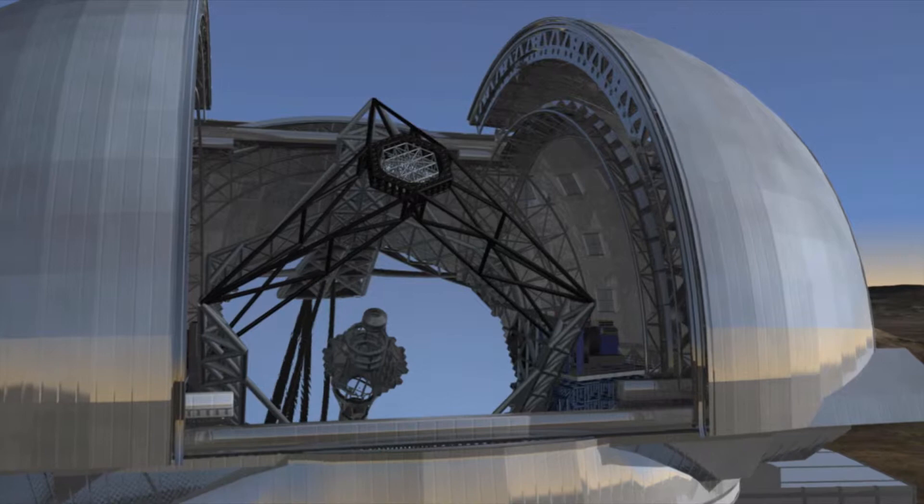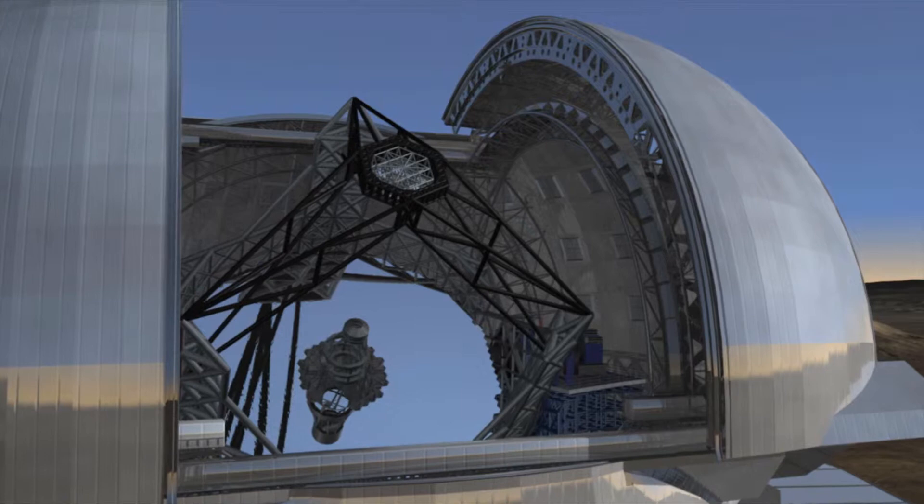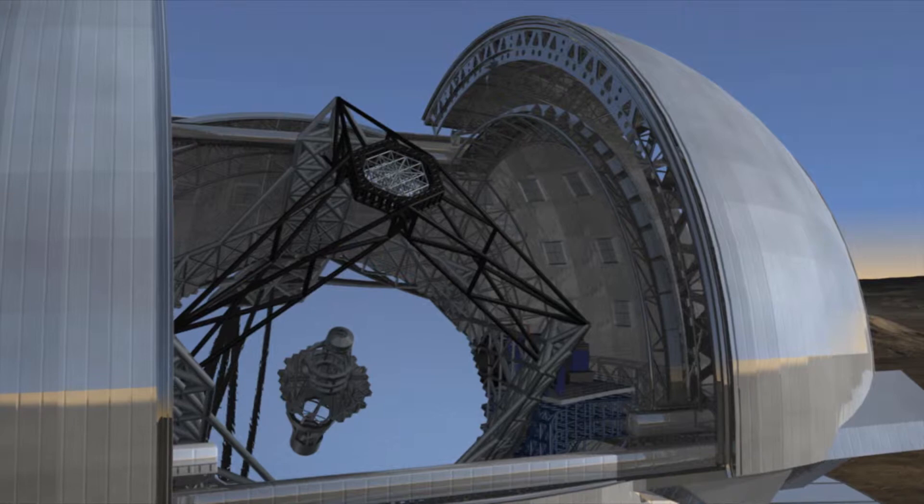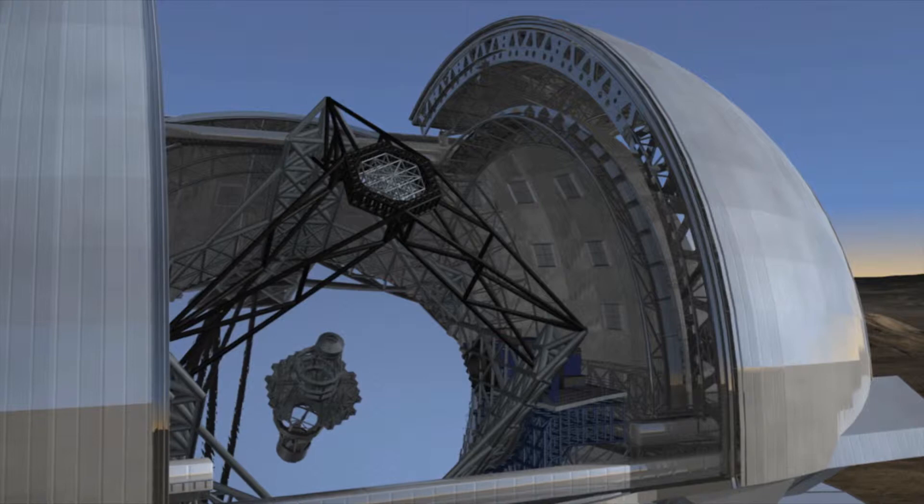Moreover, they may provide us with the first true picture of a planet in another solar system. For radio astronomers, 42 meters is peanuts. They hook up many smaller instruments to synthesize a much larger receiver.